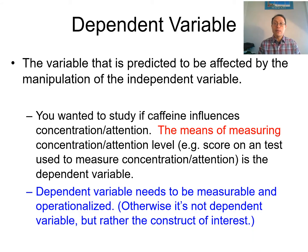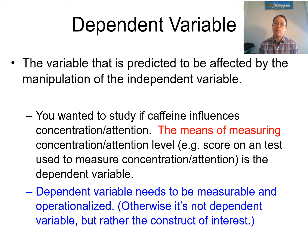Now let's talk about the dependent variable. The dependent variable is the readout — it's the variable predicted to be affected by the manipulation of the independent variable. So if you wanted to see if caffeine influences concentration or attention, then the way that you measure these concentration and attention levels — those are the dependent variables. The dependent variable needs to be measurable and operationalized, otherwise you're just looking at a construct.